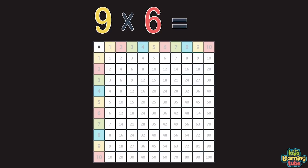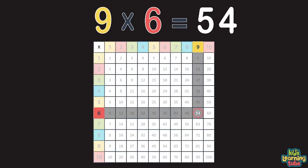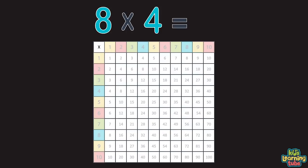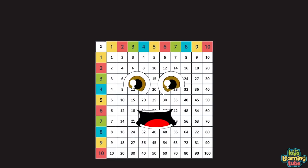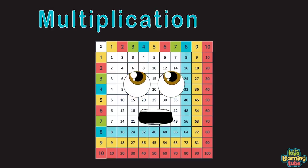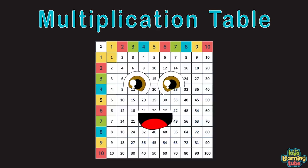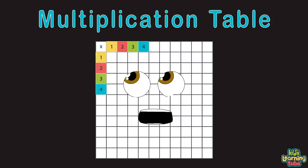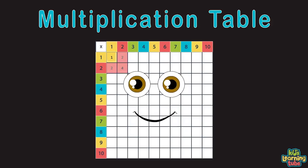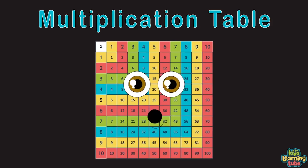Another example is multiplying nine times six. The two lines meet at fifty-four where your eyes are transfixed. Here's one more equation: it's eight times four. The answer is thirty-two. I am the multiplication table. Remember me because you're able. We'll learn to multiply one through ten, up to one hundred because you can.